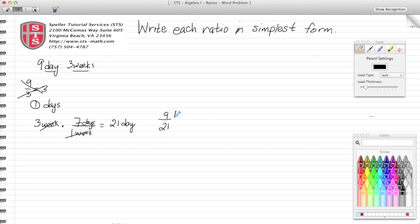When I write my fraction to compare these, I have 9 over 21—actually, 9 days over 21 days. The units cancel, leaving me with 9 over 21. Both of these numbers are divisible by 3: 9 divided by 3 is 3, and 21 divided by 3 is 7. So I see the comparison of nine days to three weeks is 3 to 7.